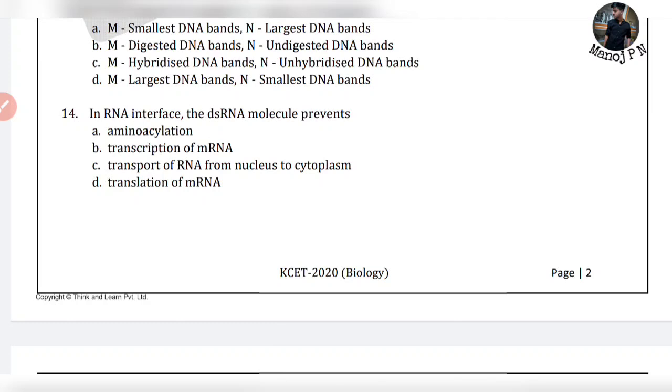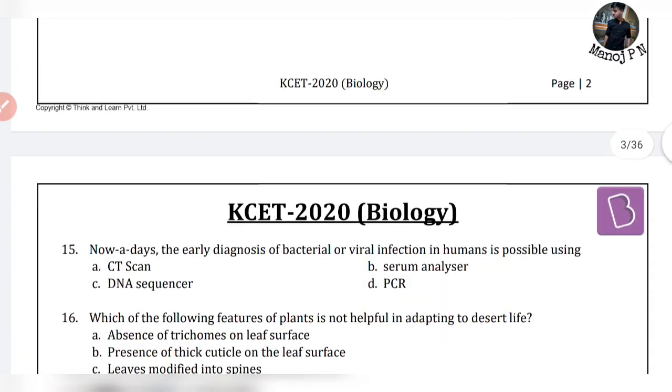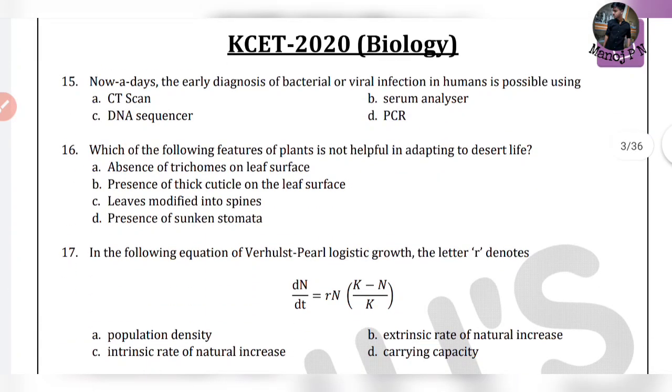Look at the 15th question: nowadays, the early diagnosis of bacterial or viral infection in humans is possible using PCR. It is very simple — PCR.